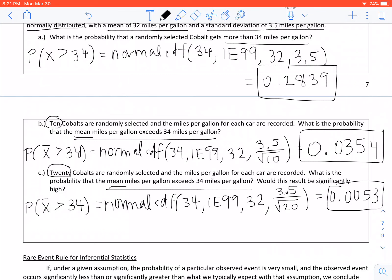The second question on here says, would this result be significantly high? Yes. And the reason why is because the probability of it being more than 34 miles per gallon is really small. The probability of that happening is 0.0053. So yes, this is significantly high, and the reason why is because the probability is less than 0.05.